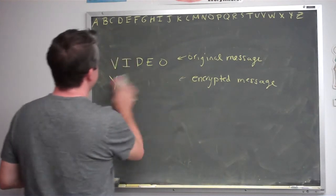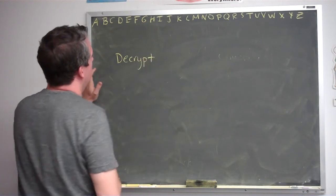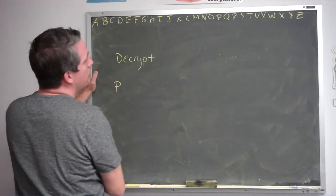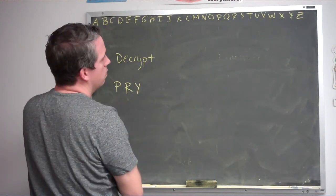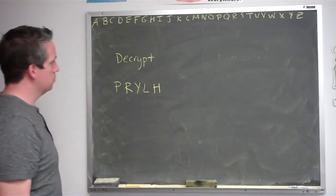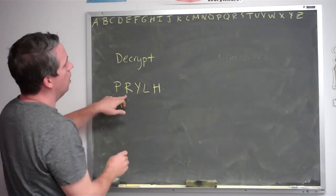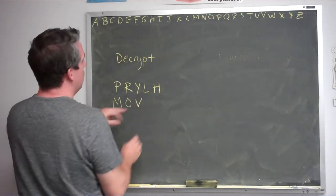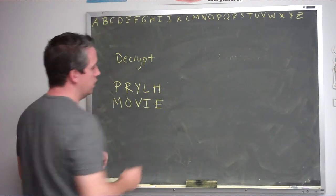Let's try another one — let's decrypt P, R, Y, L, H and see what it says. P goes back one, two, three to M. R goes back one, two, three to O. Y goes back one, two, three to V. L goes back one, two, three to I. And H goes back one, two, three to E. So it decrypts to 'movie.'